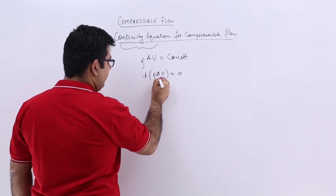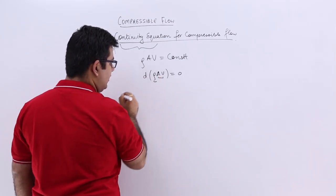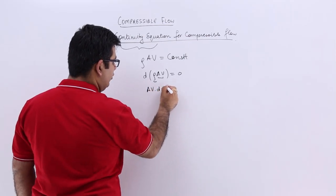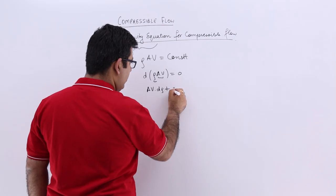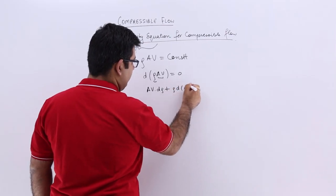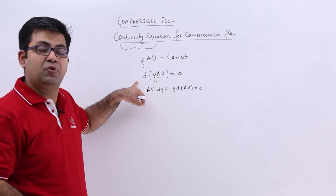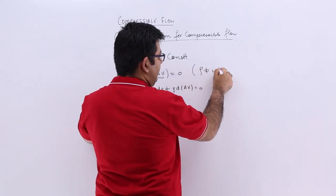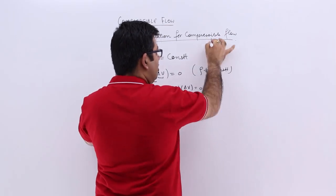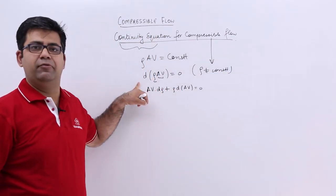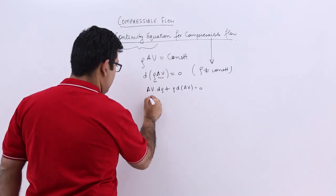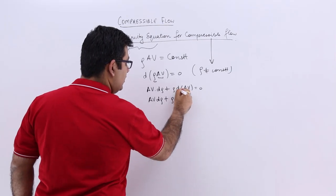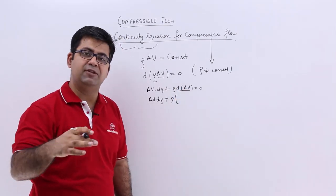When you look at this, taking one term and the other term, you will have av·dρ plus ρ·d(av). Now in this equation I am not treating ρ as constant, because now we are talking about a compressible flow. So let us resolve this further. This part gives us a·dv plus v·da.